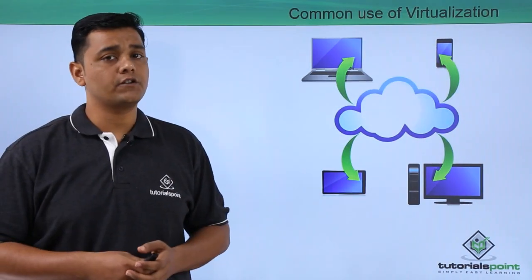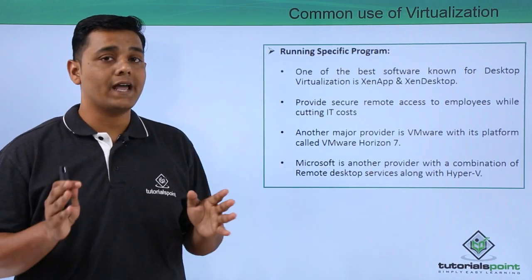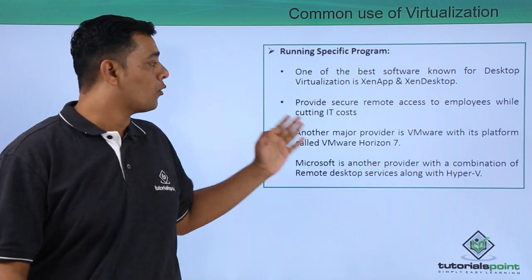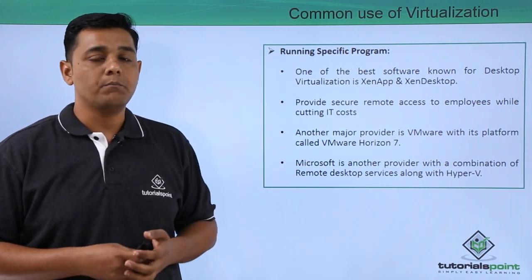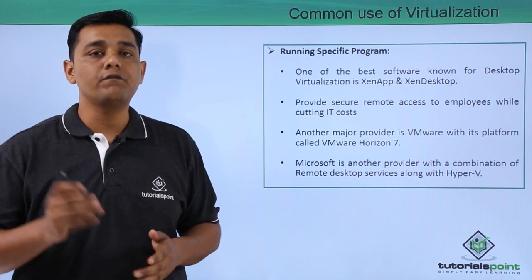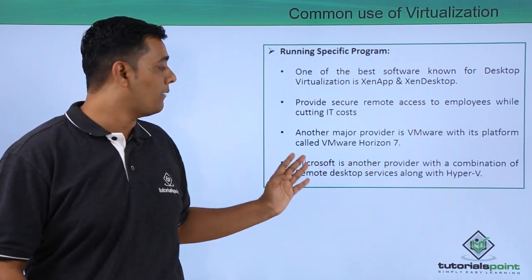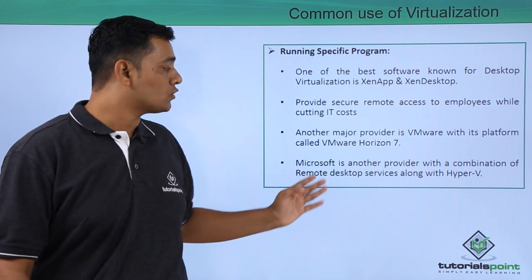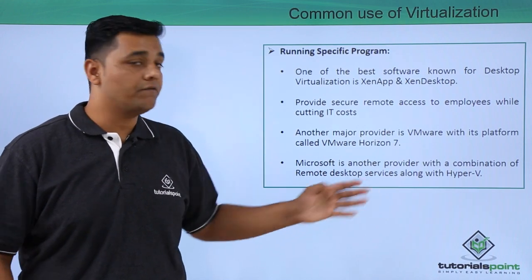The next common use of virtualization is running a specific program. One of the best-known desktop virtualization software is XenApp and XenDesktop, which provides secure remote access to employees while cutting IT costs, because you do not need to pay for a full physical machine. Another major provider is VMware with a platform called VMware Horizon 7. Microsoft is another provider, combining Remote Desktop Services with Hyper-V.